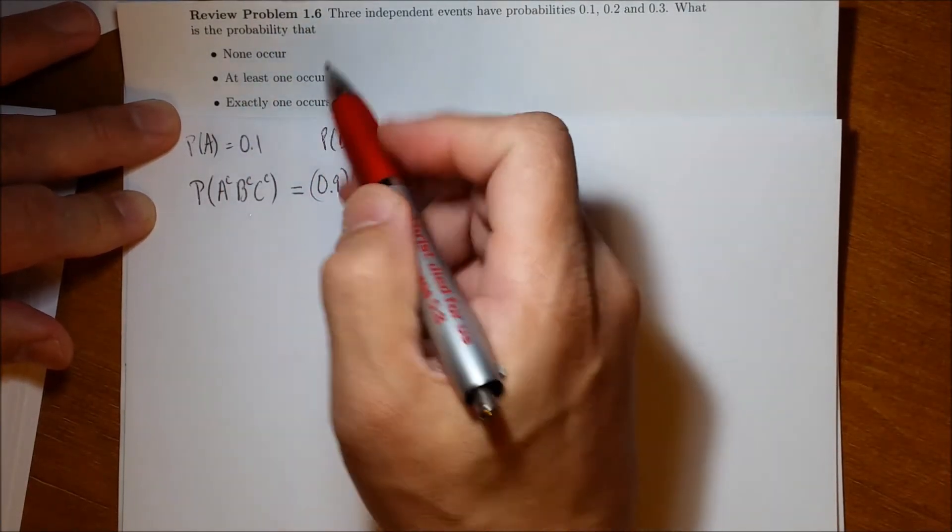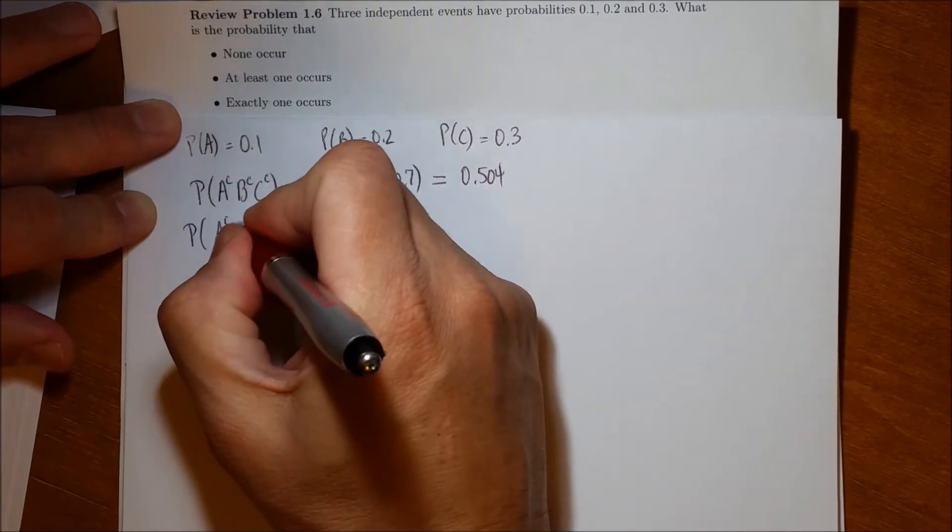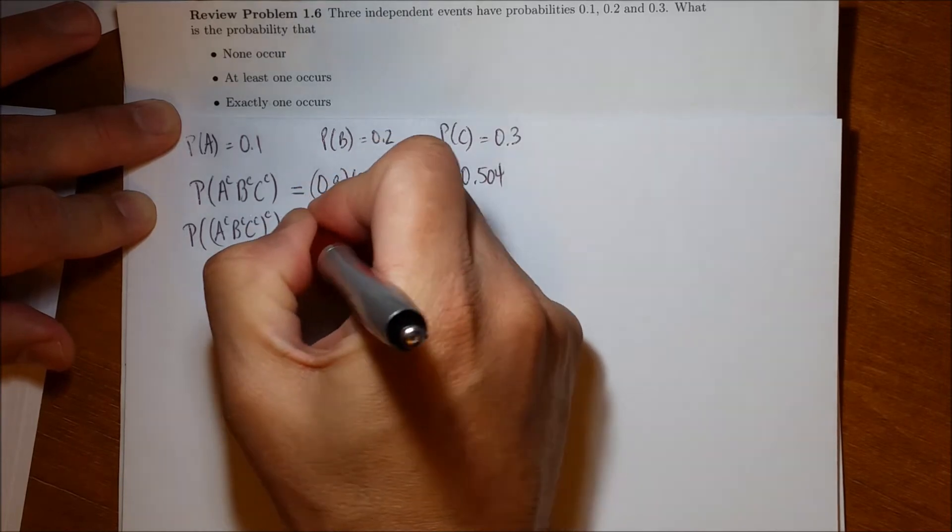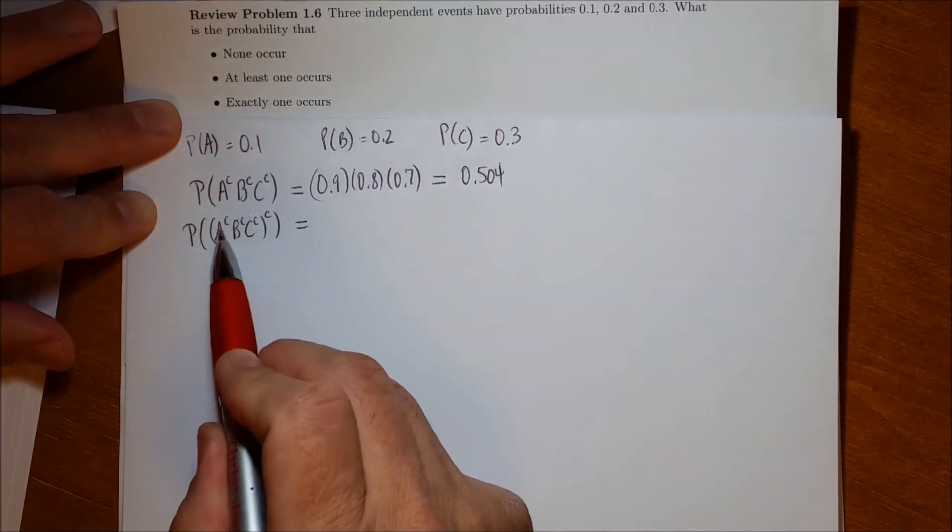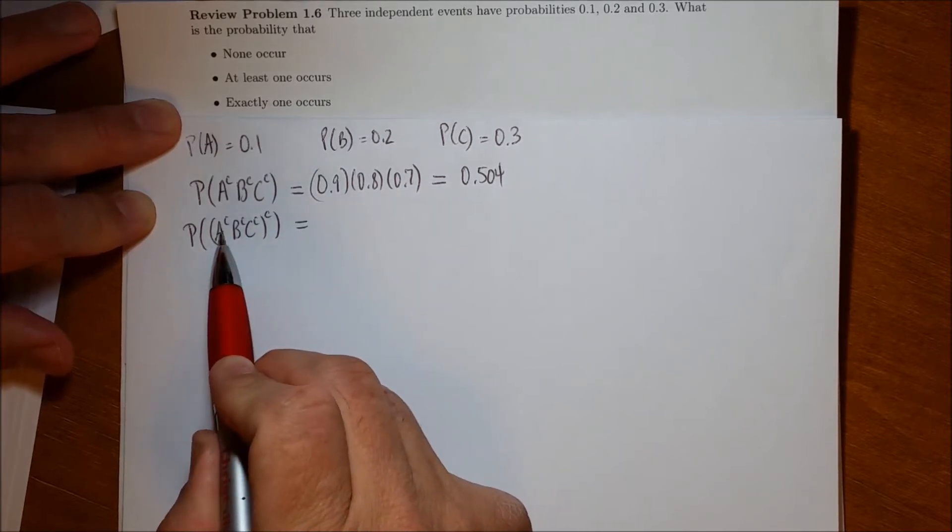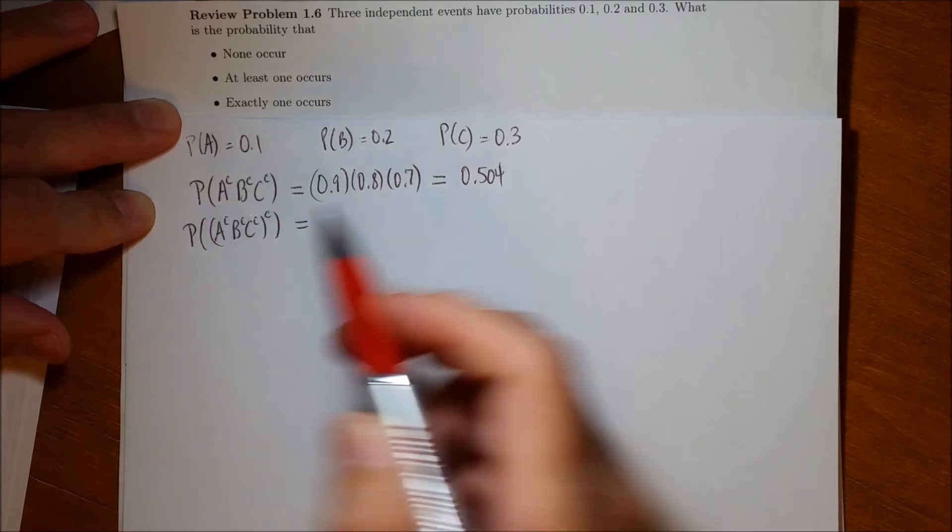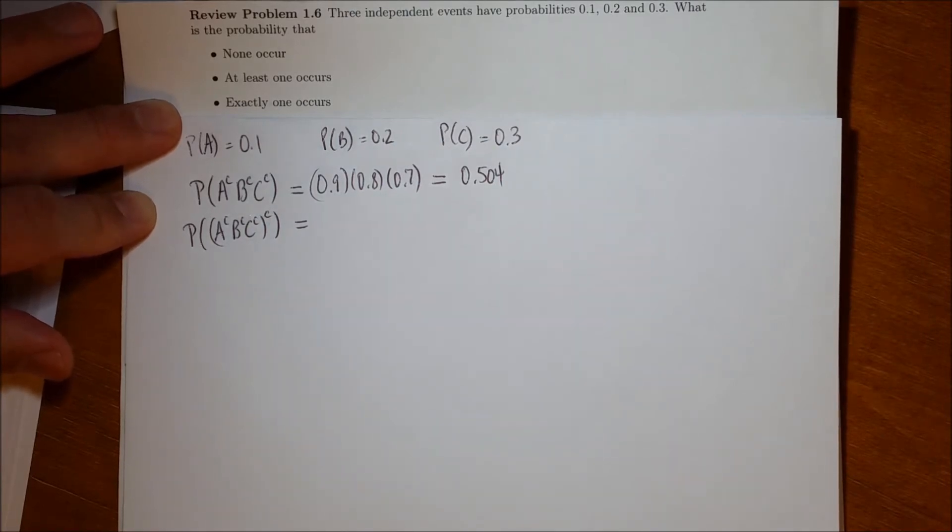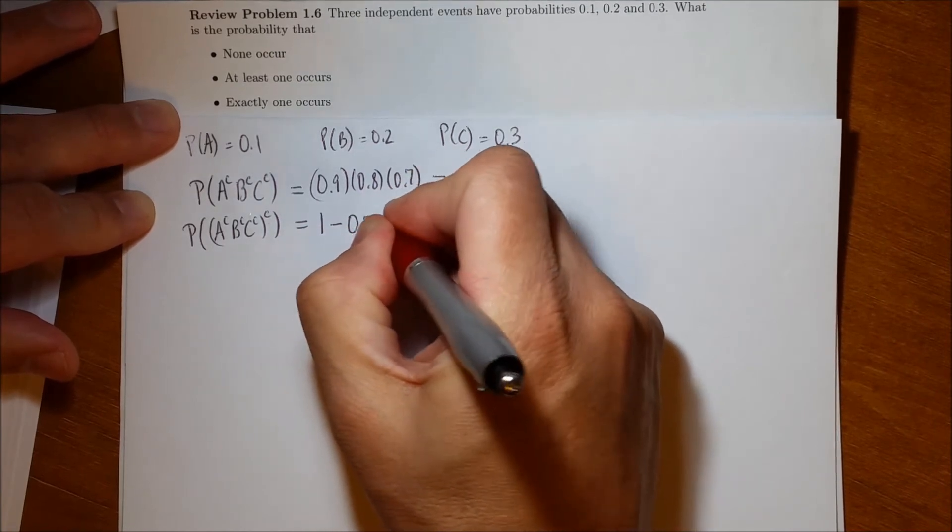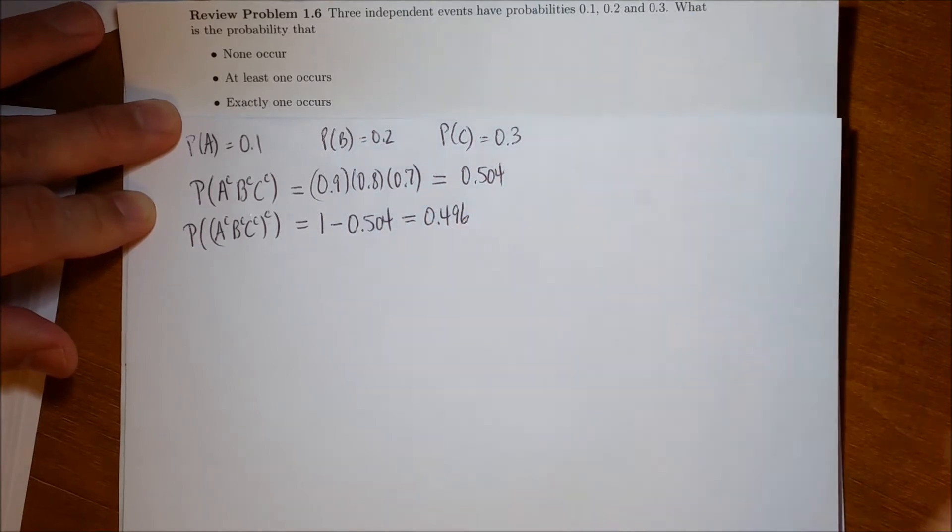What's the probability that at least one event occurs? Well, at least one event occurring is the opposite of no events occurring. So that's the complement of none events occurring. If I take the complement of that intersection, that's the probability that at least one of them occurs. And that is simply one minus the chance that none of them occur, and so that's equal to 0.496.